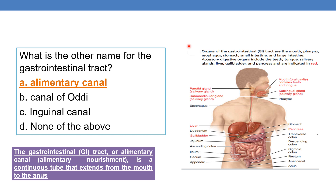The organs of the GI tract are: mouth, pharynx, esophagus, stomach, small intestine, and large intestine. The accessory digestive organs are: teeth, tongue, salivary glands, liver, gallbladder, and pancreas — and these are indicated by red color.